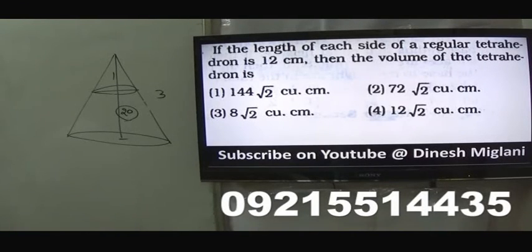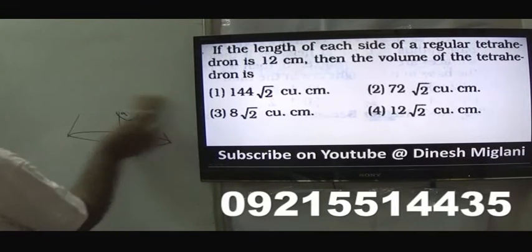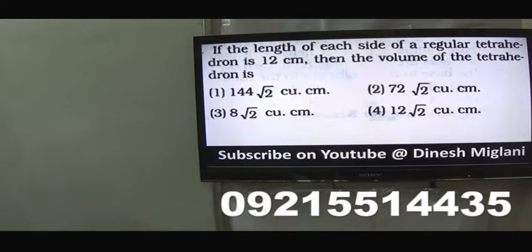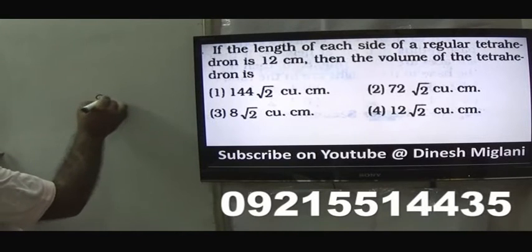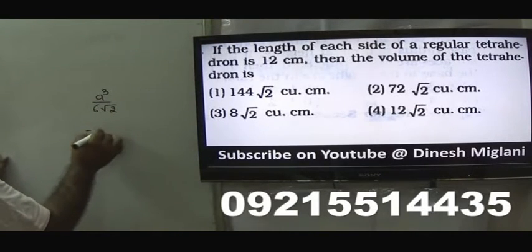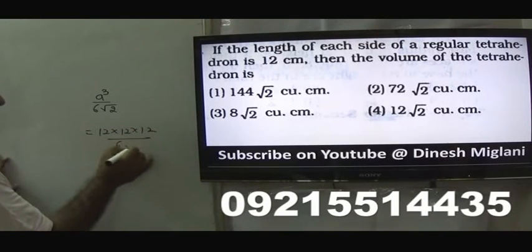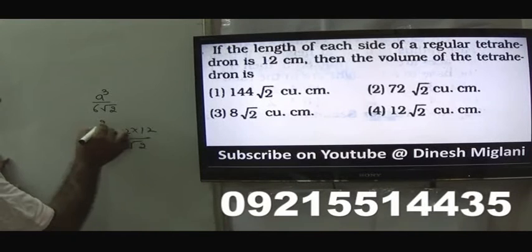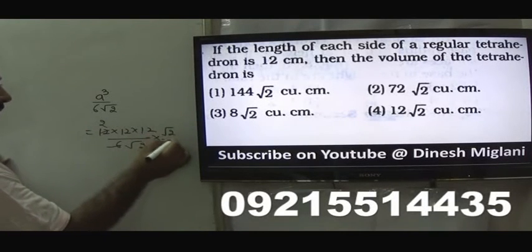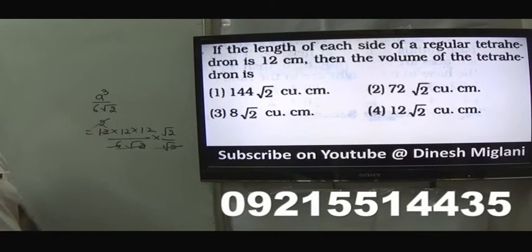Next question: length of each side of a regular tetrahedron is 12. Find the volume. Volume = a³ / (6√2) = 12³ / (6√2) = 1728 / (6√2). Multiply and divide by √2: we get 1728√2 / 12 = 144√2. First option is my answer.